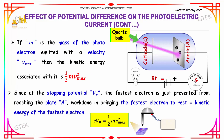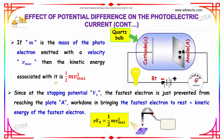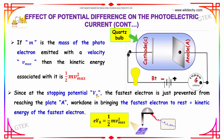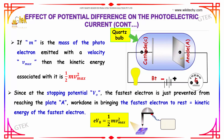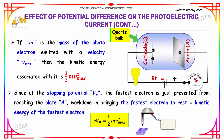If m is the mass of the photoelectron emitted with a velocity of v_max, then the kinetic energy associated with it is given by half mv²_max. Since at the stopping potential V₀ the fastest electron is just prevented from reaching plate A, the work done in bringing the fastest electron to rest is equal to its kinetic energy. So, eV₀ = ½mv²_max.